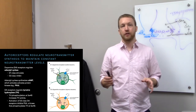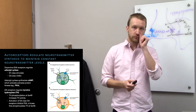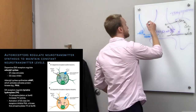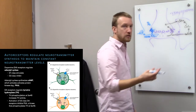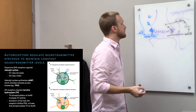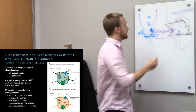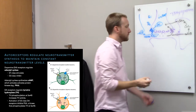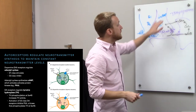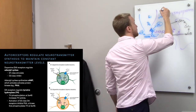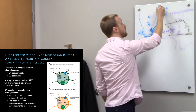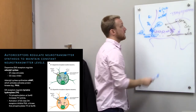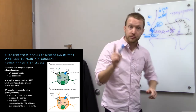One of the ways autoreceptors can do this is by targeting the synthesis of neurotransmitters. A good example is dopaminergic neurons, which have D2 autoreceptors. D2 receptors are Gi-coupled, so activation of the D2 autoreceptor inhibits the enzyme adenylyl cyclase, leading to a decrease in cyclic AMP levels. Cyclic AMP activates protein kinase A, so with less cyclic AMP, protein kinase A activity decreases whenever dopamine binds to its autoreceptor. In a few steps, dopamine binding reduces protein kinase A activity.